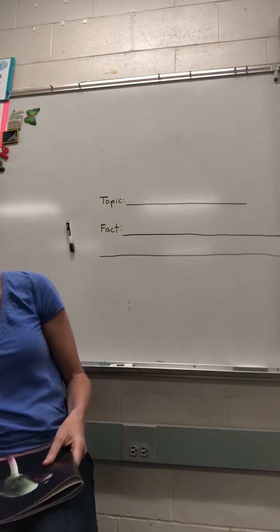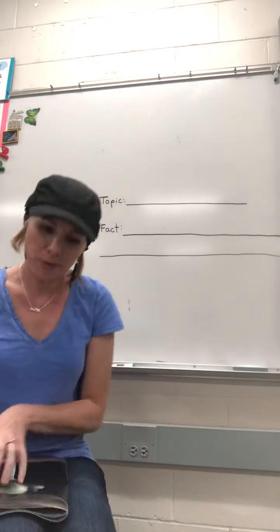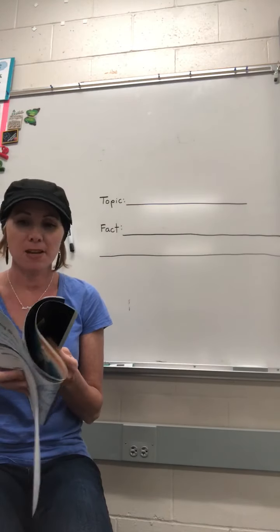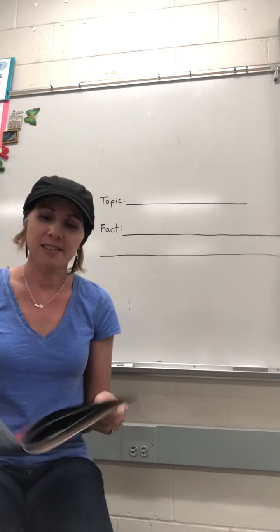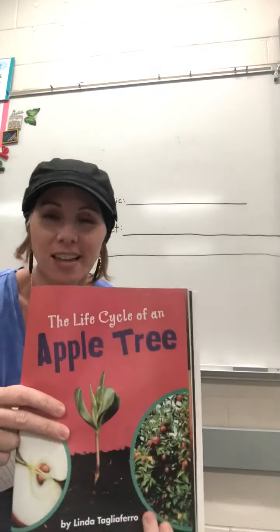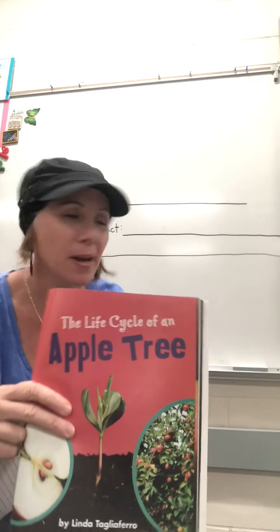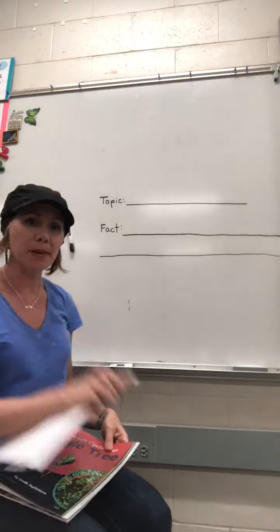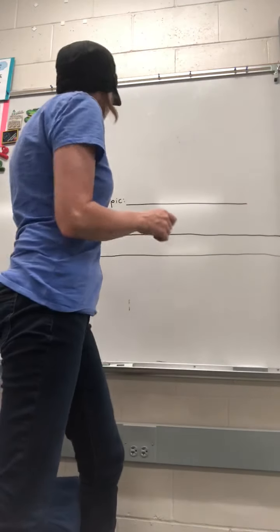So think about what was the topic of that story. What was it mostly about? When I think about the topic, especially on informational text like this, think about the title. The title was The Life Cycle of an Apple Tree. So if I was thinking about the topic, I would probably write just that: The Life Cycle of an Apple Tree.